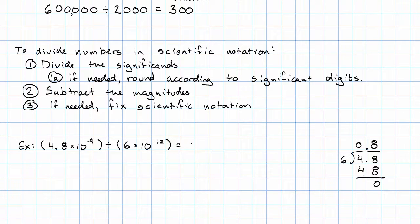Nothing left. So we'll just have 0.8 times 10 to the, well, negative 5 minus negative 12. That's going to be positive 7. So that's 0.8 times 10 to the seventh.